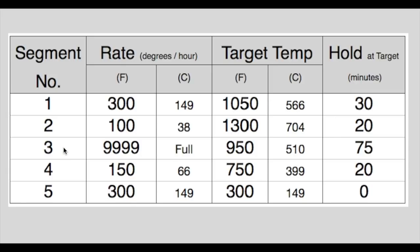In segment 3 we want the kiln to ramp as fast as it can until it reaches 950 degrees and then hold there for 75 minutes before moving on to segment number 4.